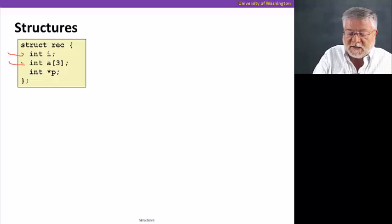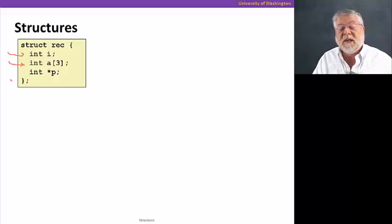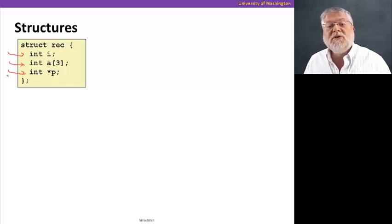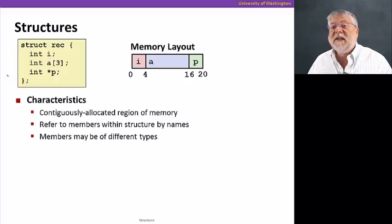One is an integer. One is an array of integers, in this case a three-element array. And the other is a pointer to an integer. So those are three parts to that struct.